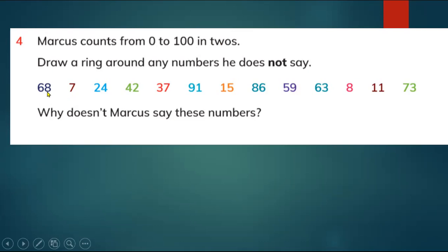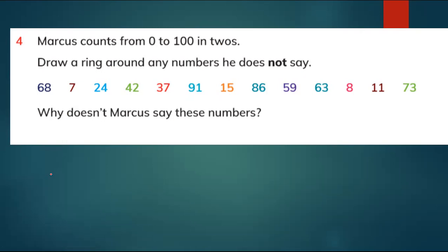Here are the numbers: 68, 7, 24, 42, 37, and so on. Marcus counts from zero to 100 and you have to draw a circle around the numbers he will not say. Before we start, we have to find out what is an odd number and what is an even number, and what counting in twos means.